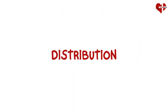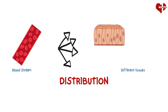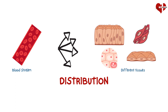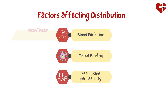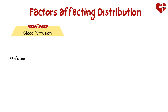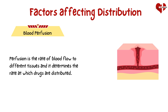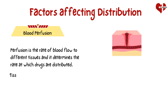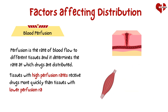After entering the bloodstream, drugs are distributed to various tissues in the body. Factors affecting distribution include blood perfusion, tissue binding, and membrane permeability. Perfusion is the rate of blood flow to different tissues and determines the rate at which drugs are distributed. Tissues with high perfusion rates, such as the heart and lungs, receive drugs more quickly than tissues with lower perfusion rates, like muscle and fat.